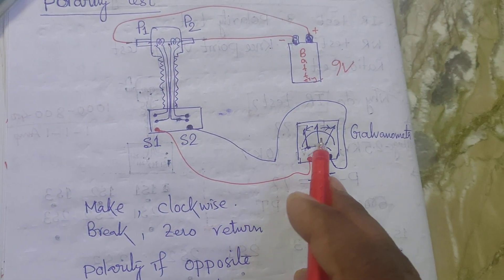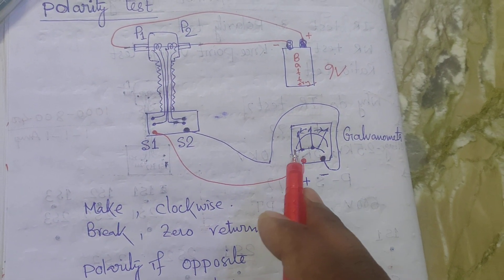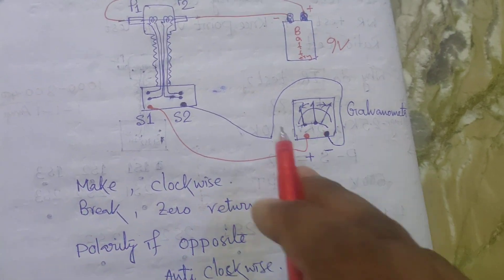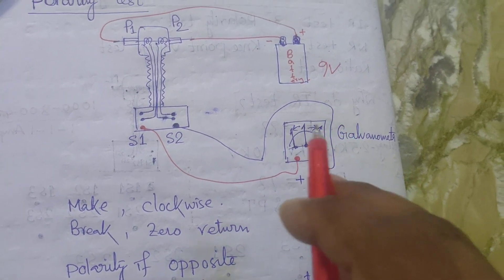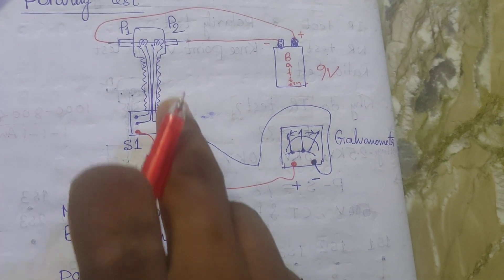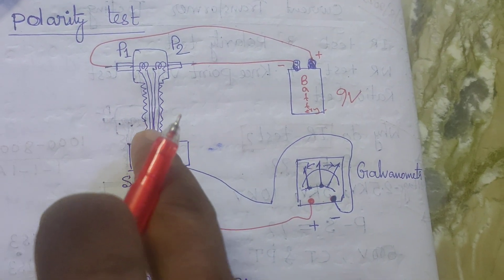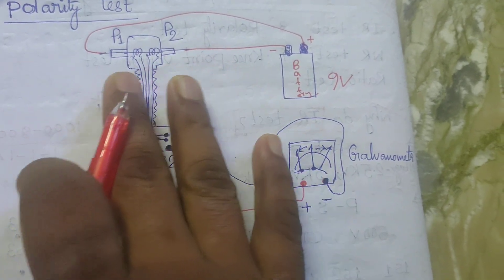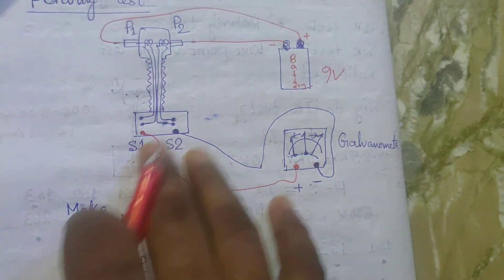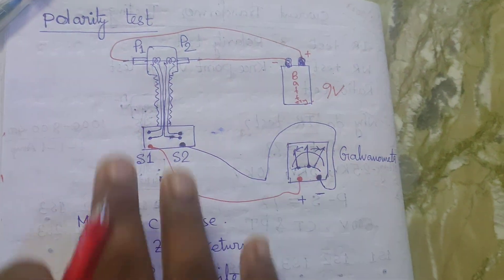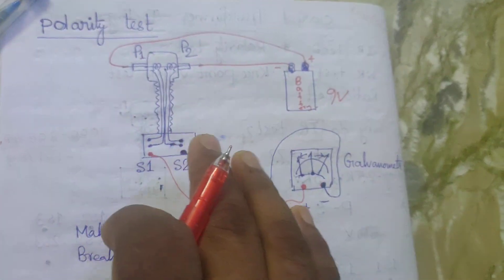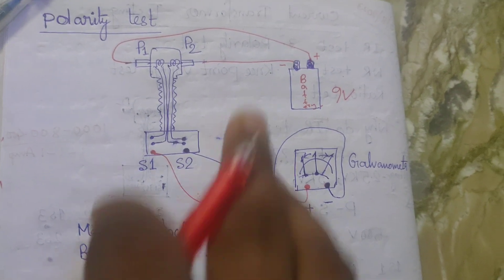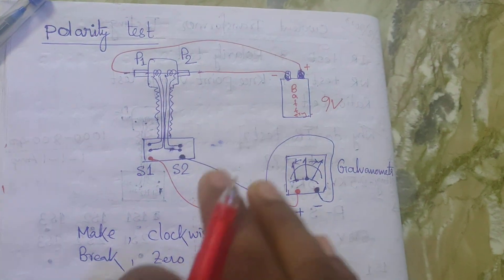If when touching the positive point the galvanometer goes in the anti-clockwise direction, and returns to zero when you break, then the polarity is not in the right condition. You have to check whether P1-P2 connections or S1-S2 connections are wrong. After correcting the connections, perform the polarity test again. If you get clockwise deflection, that confirms the polarity test is good and you can put the CT in service.